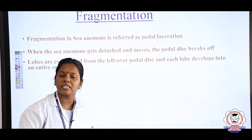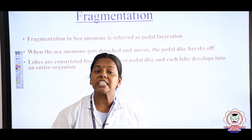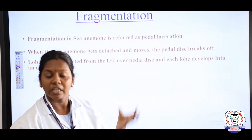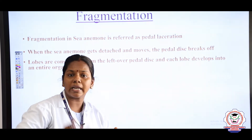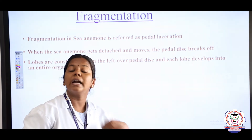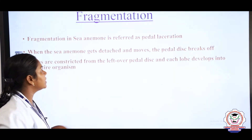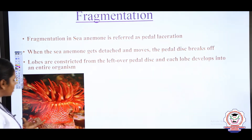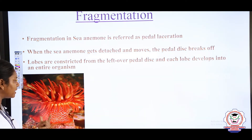Now we are going to study another method of asexual reproduction: fragmentation. What do you mean by fragmentation? If an organism reproduces by producing fragments — a single body cut into many parts — it is said to be fragmentation. We are going to study fragmentation in sea anemone. Sea anemone belongs to the phylum Cnidaria.